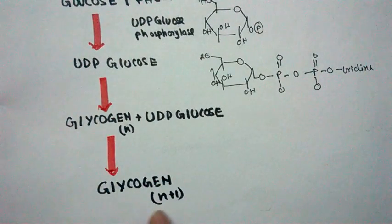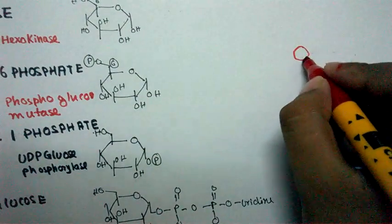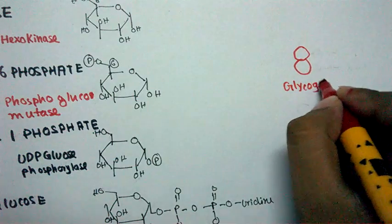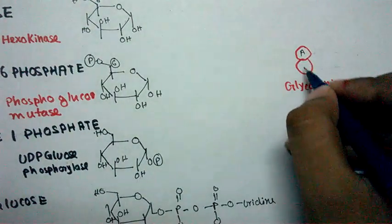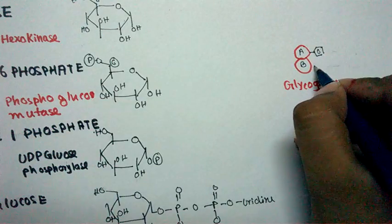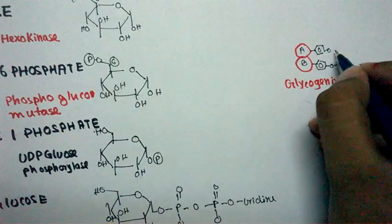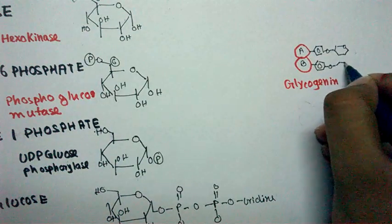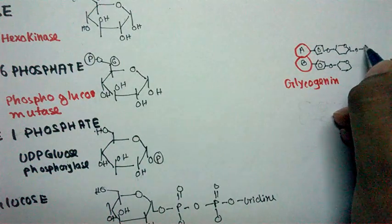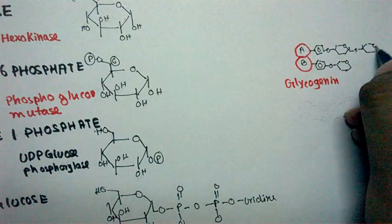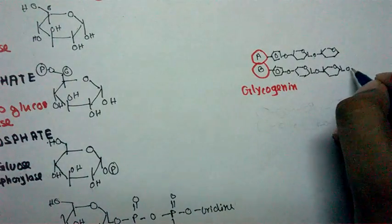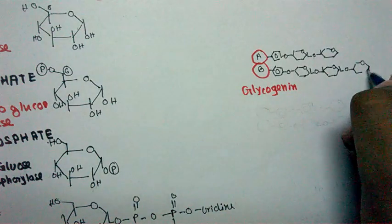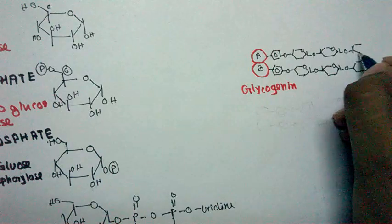Now if we talk about how the preformed glycogen polymer is initiated, we should talk about a protein named glycogenin. This glycogenin protein is actually a dimer with two subunits: subunit A and subunit B. At the terminal position it has a tyrosine group, and with this tyrosine group some glucose molecules are attached. From these glucose moieties, further attachment of other glucose moieties — that is, UDP-glucose — takes place and elongates the chain.